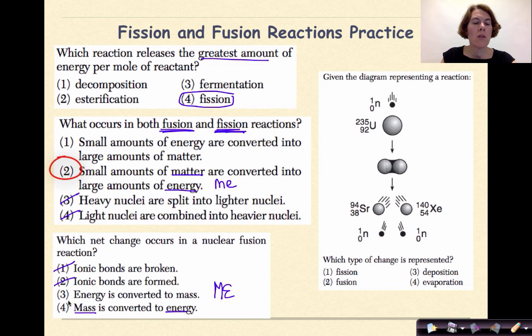Finally, given the diagram representing a reaction, which type of change is represented? So we have a particle hitting a target nucleus, forming an intermediate, and breaking down into lighter nuclei and more particles. So that's definitely not deposition or evaporation, because those have to deal with phase changes. So you're either dealing with fission or fusion. Now, fusion is making something bigger, fusing something together, so the only possible answer here is fission, which means to break something apart, because remember, this is just another demonstration of artificial transmutation, which we talked about beforehand.